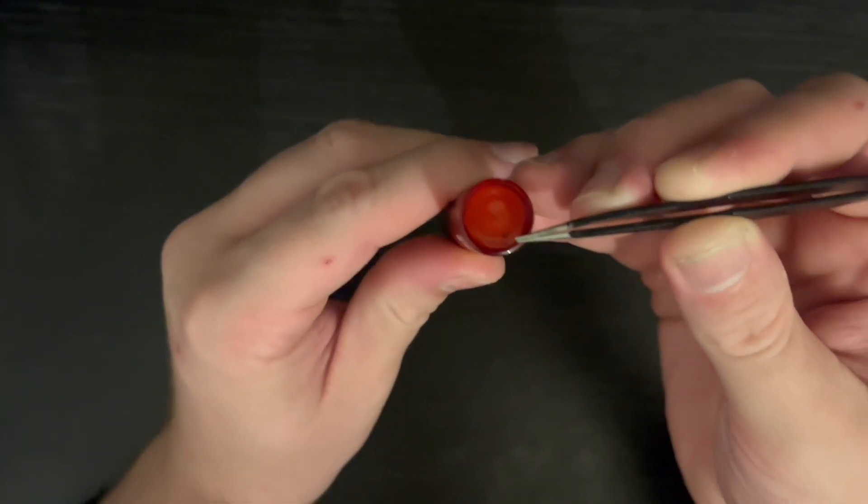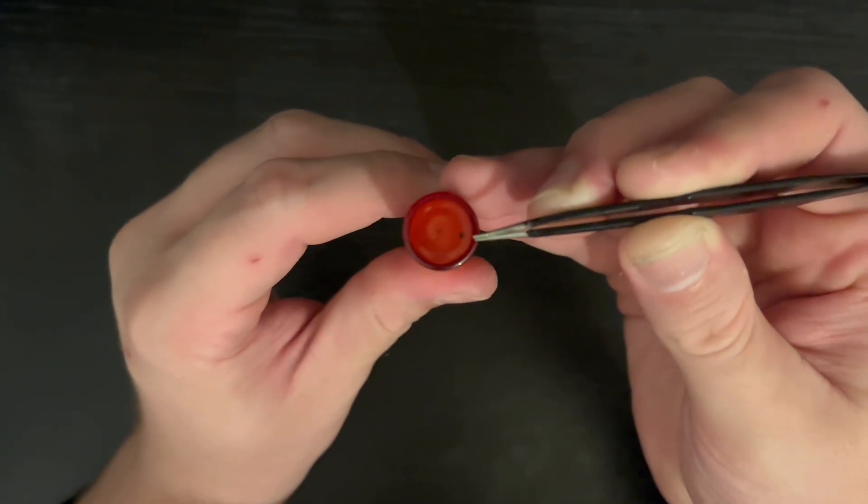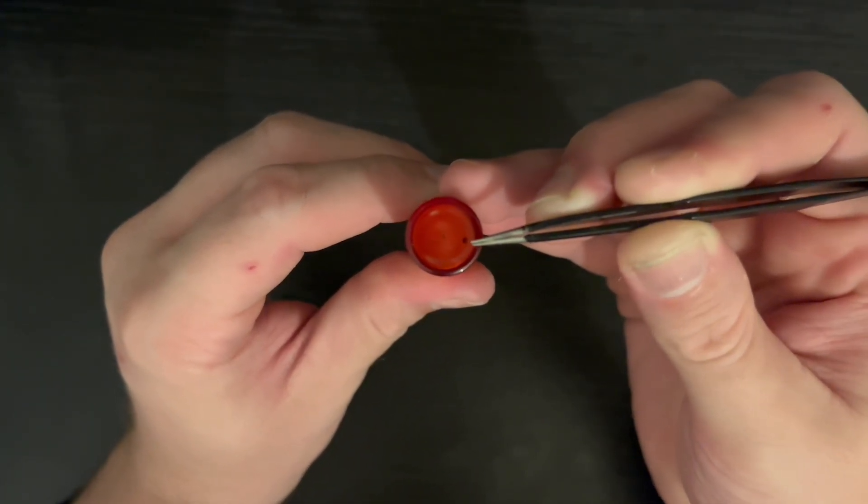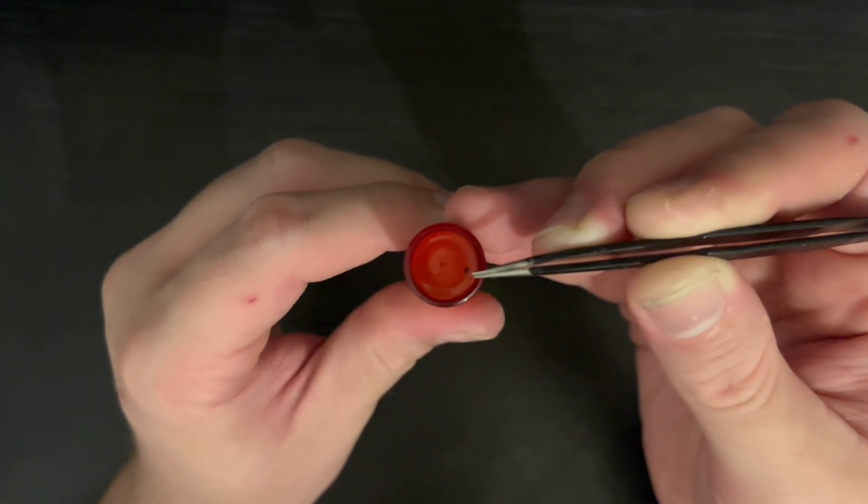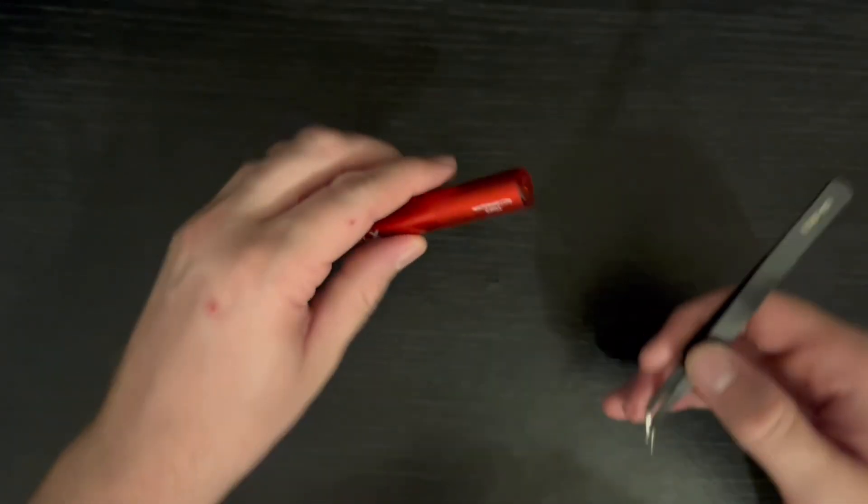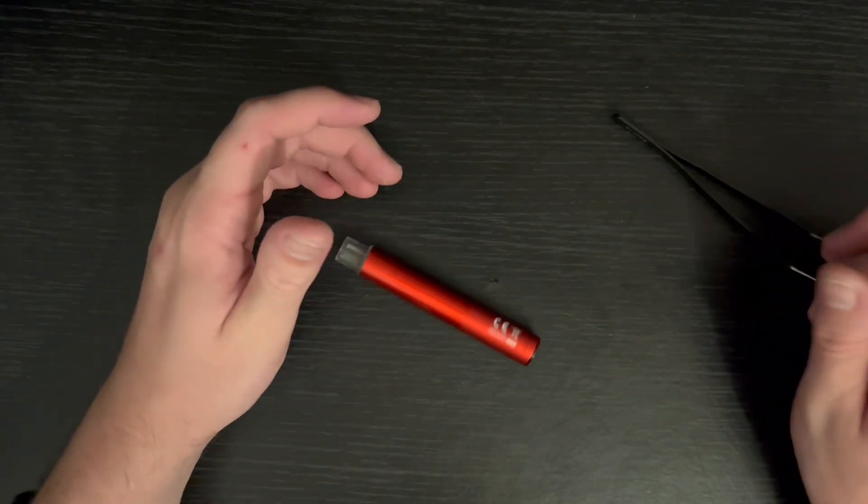You can just see the airflow hole there, that little dark spot. So it has the sensor in the middle and then here is your airflow channel.